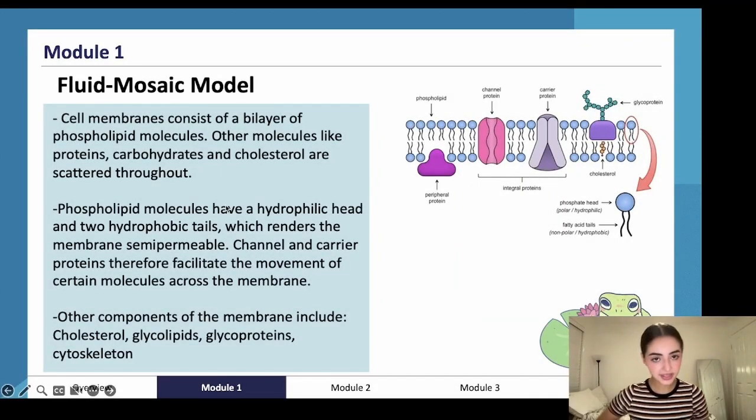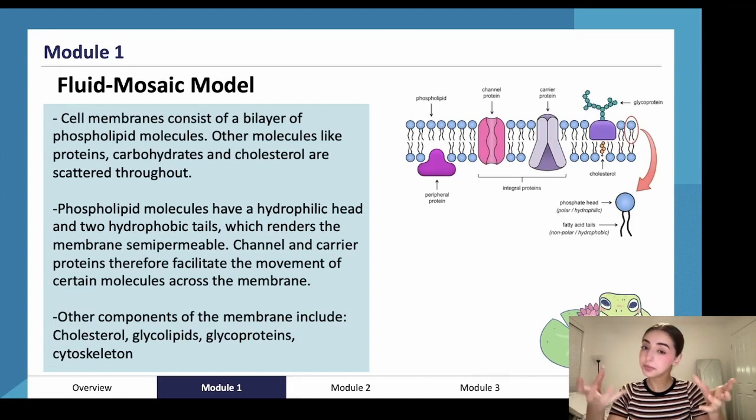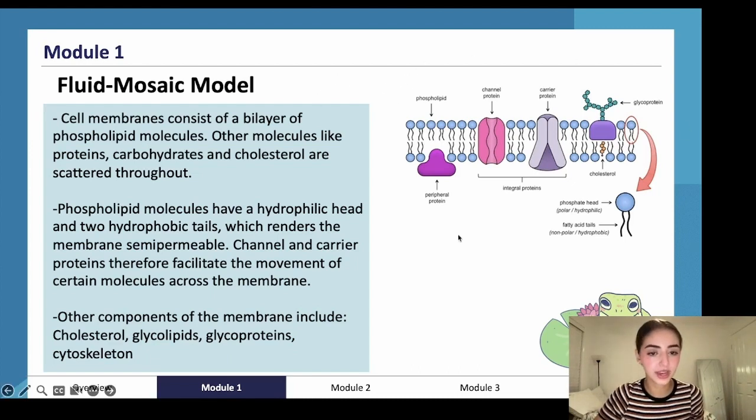Remember how I said the cell membrane is fluid, whereas for plants it's rigid? The cell wall, however, in animals it's fluid. That's because it's called the fluid mosaic model. Let's go through what a fluid mosaic model is.